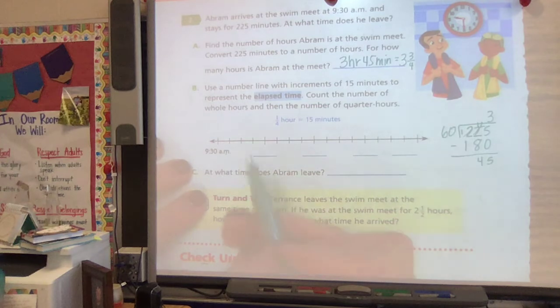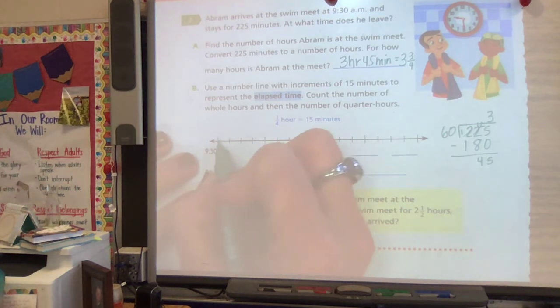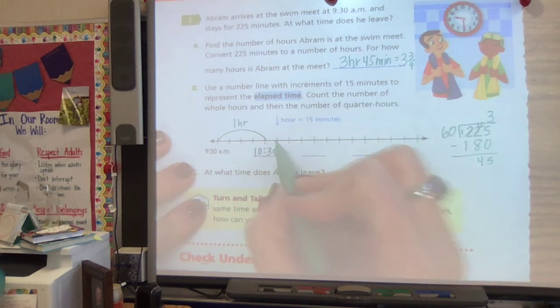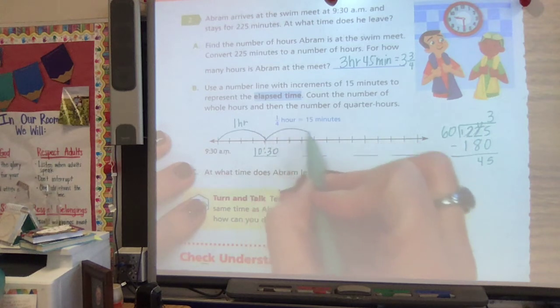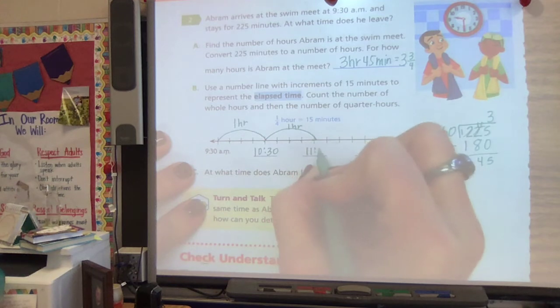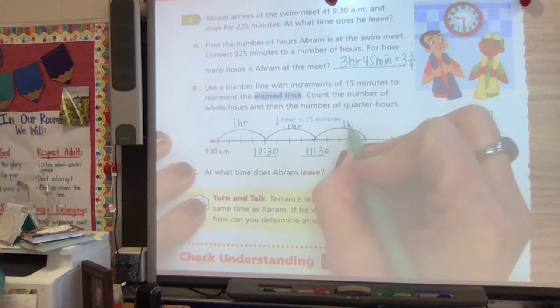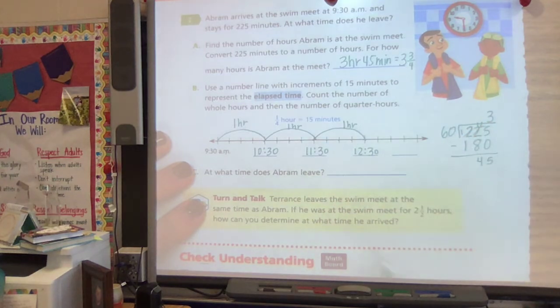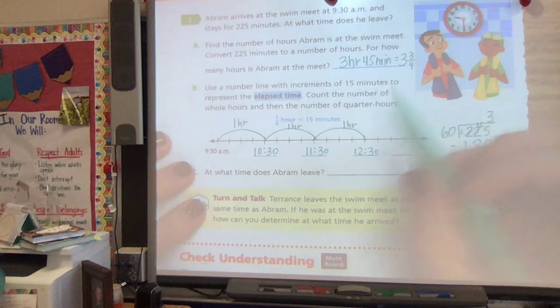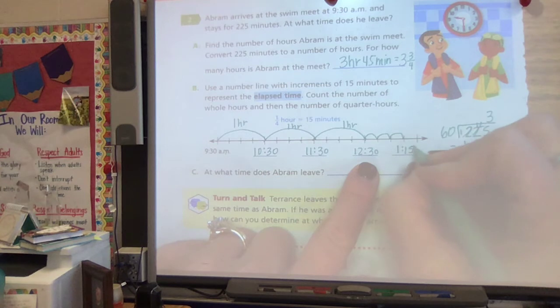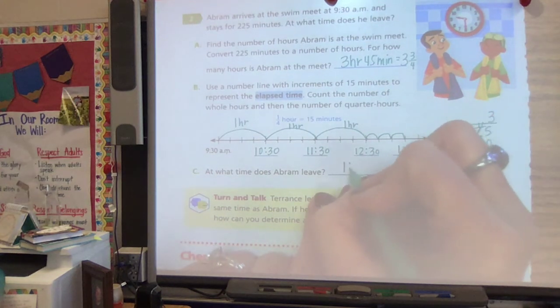So if you're here at 9:30 and we know that we're going 15, 30, 45, an hour. So here to here is one hour and that's 10:30. Then another hour, that's 11:30. Remember we went three hours. So we need to do another hour, which is 12:30. And then he only went 45 minutes. So 15, 30, 45. So if we're at 12:30 and we add 45 minutes to it, this is going to have to be 1:15. So he left at 1:15 PM.